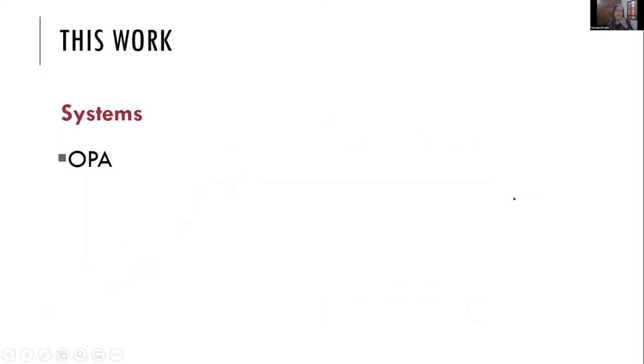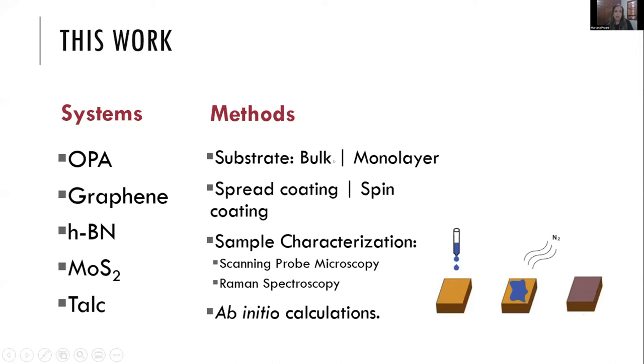We studied OPA, this organic molecule, on top of four different 2D materials: graphene, hexagonal boron nitride, molybdenum disulfide, and talc. The method is quite simple. We use as substrate either bulk material or samples produced by mechanical exfoliation with the scotch tape method. For molecular decoration, we use dip coating or spin coating. We characterized samples with Raman spectroscopy and scanning probe microscopy, and performed ab-initio calculations.